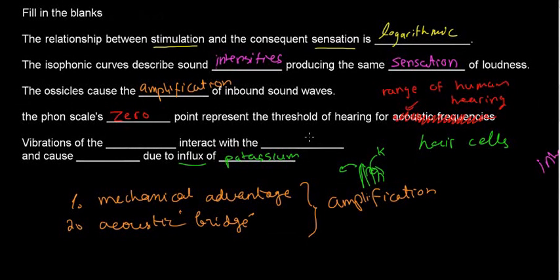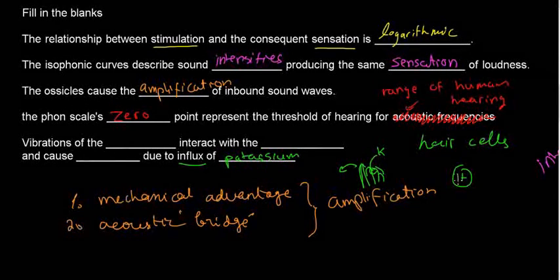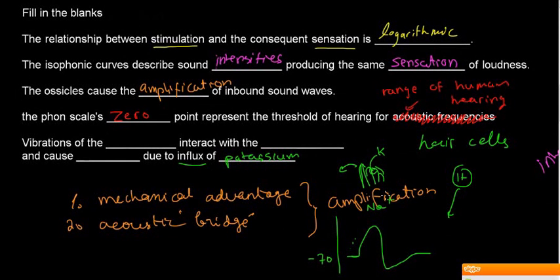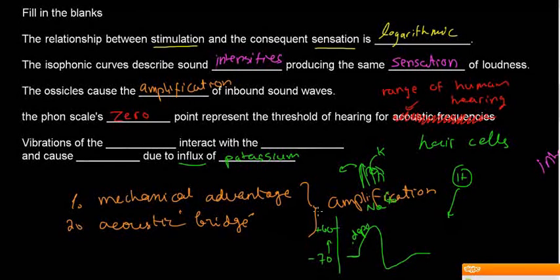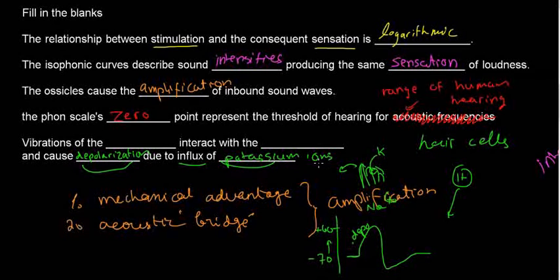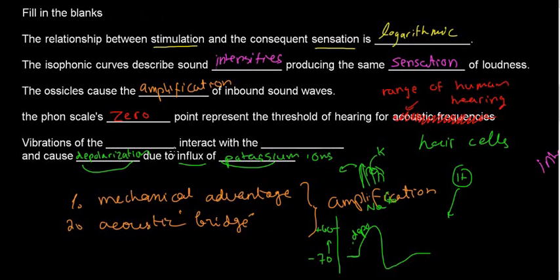Vibrations of something interact with something and cause something due to influx of potassium. From action potential, we know that when we have an influx of positive ions — say sodium or any positive ion entering the cell — it causes the membrane potential to become more positive. This is called depolarization. So vibrations cause depolarization due to the influx of potassium ions, and we know this happens in the hair cells.